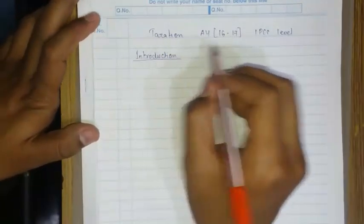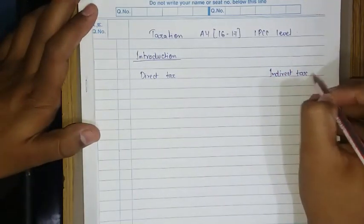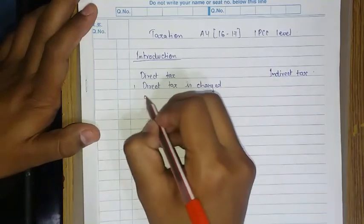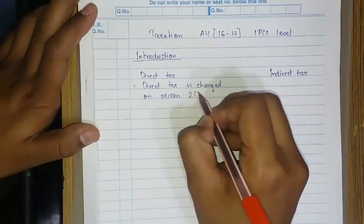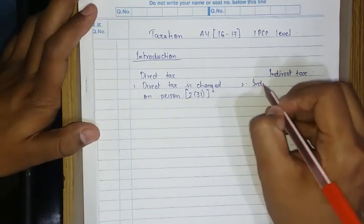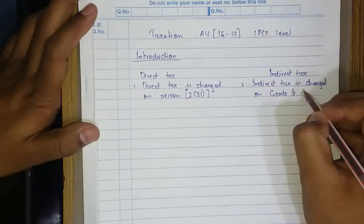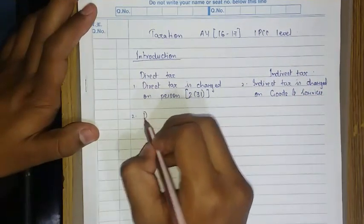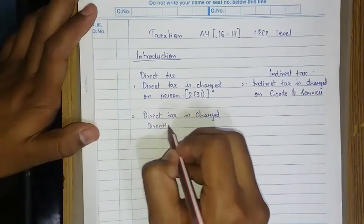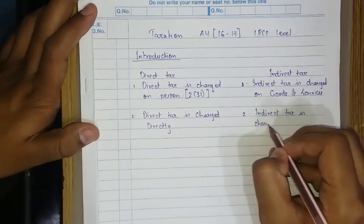Taxation is basically divided into two parts: direct tax and indirect tax. Direct tax is charged on persons as per section 231, while indirect tax is charged on goods and services. Direct tax is charged directly.